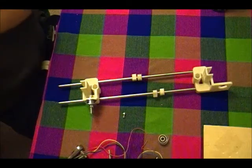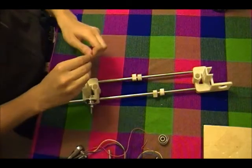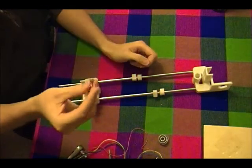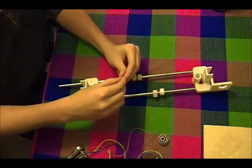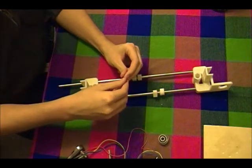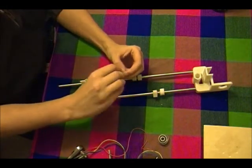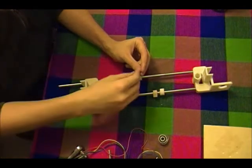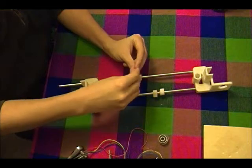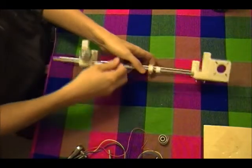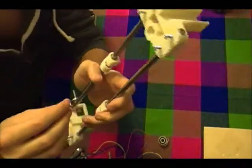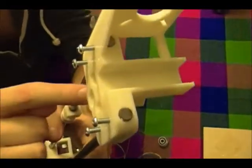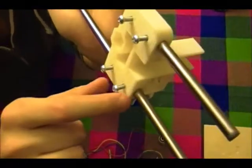This takes 8 number 6 nuts and number 6 screws. I'm using half-inch screws so they're not poking out as much on the bottom of the x-axis plastic. Here are these 8 and these 8.